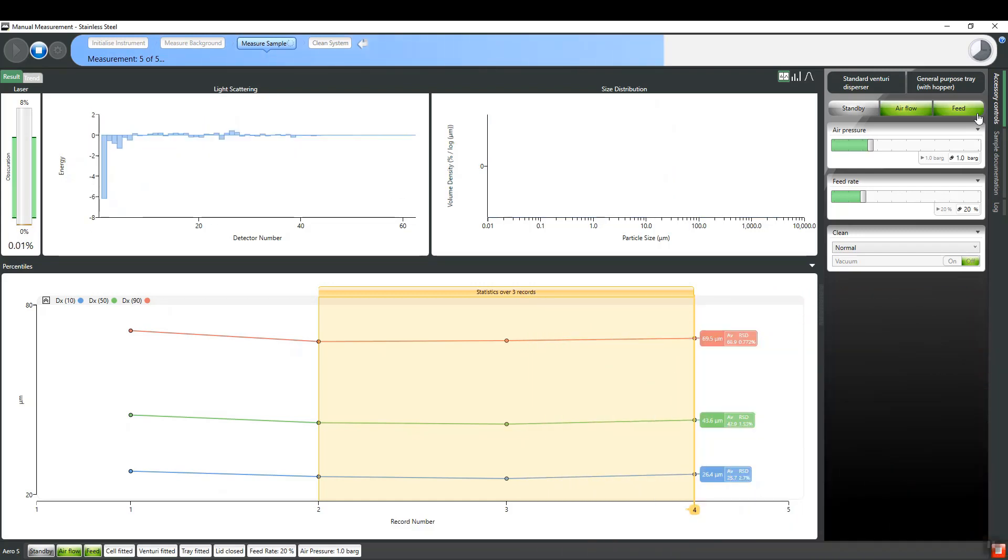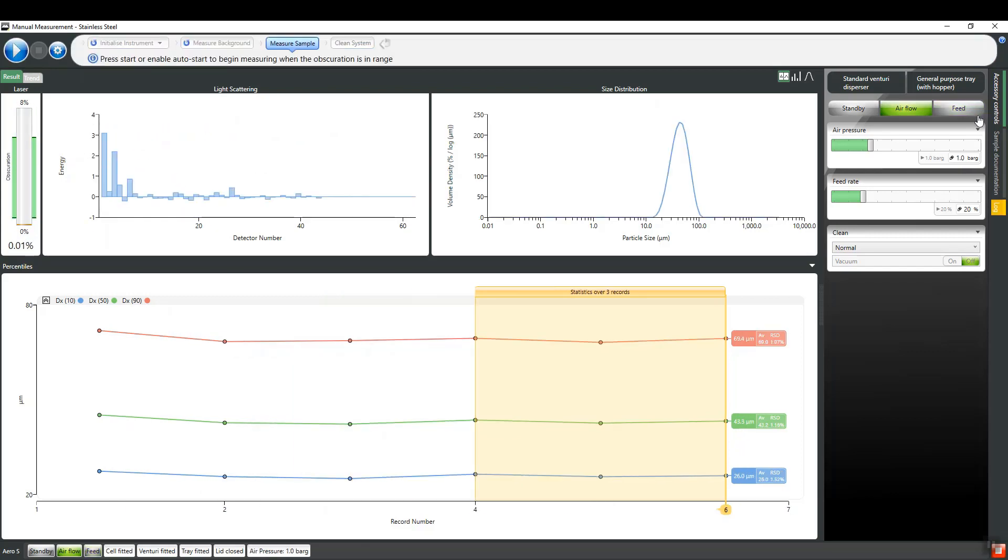Results from individual measurements will be visible side by side each other on the trend graph at the bottom, which shows the sizes of the DV10, DV50 and DV90 percentiles.